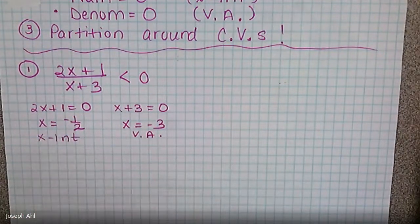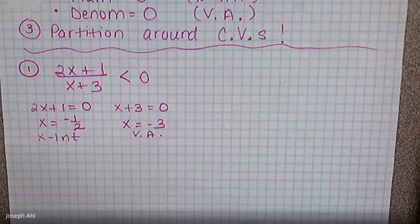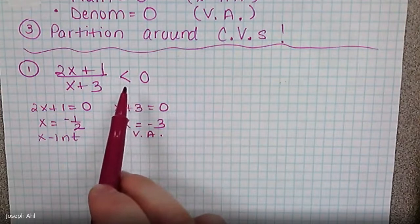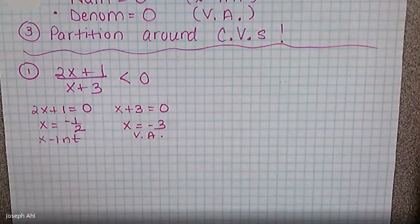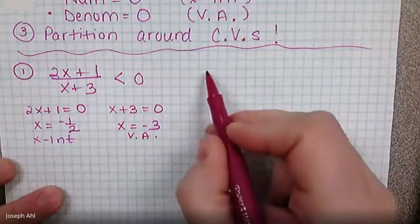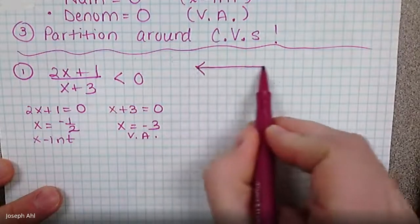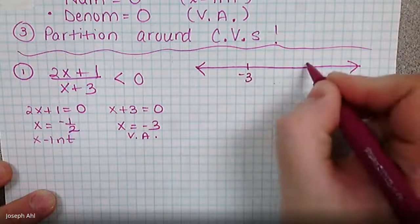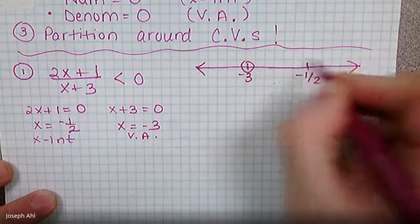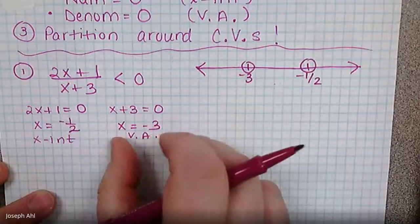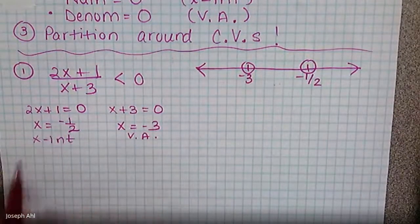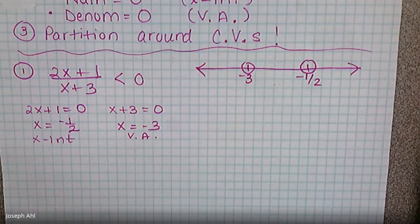It's important to point out the difference between x-intercepts and vertical asymptotes: depending on the inequality sign, if we can include equal to zero, we would include the x-intercept in our solution — but in this one we can't. Plotting those critical values on a number line, we have negative three and negative one-half, both with open circles. The vertical asymptote is always open; the x-intercept depends on the inequality sign. Let's test some values — starting with something to the left of negative three, like negative four.